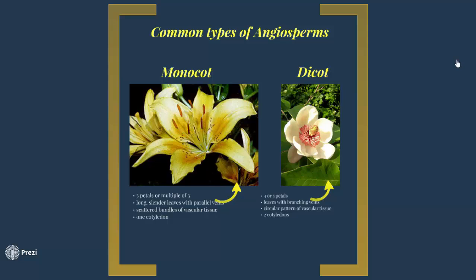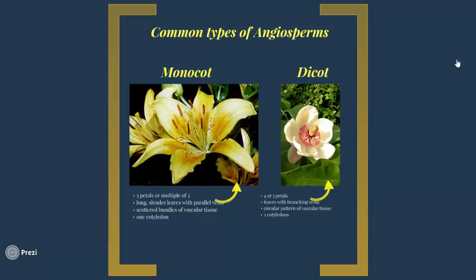Within the category of angiosperms, we have monocots and dicots. A monocot has three petals or a multiple of three — so three, six, nine, twelve, fifteen, and so on. They have long and slender leaves with parallel veins, scattered bundles of vascular tissue, and one cotyledon. Dicots have four or five petals, leaves with branching veins, a circular pattern of vascular tissue, and two cotyledons.